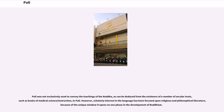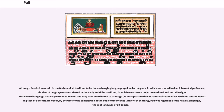Pali was not exclusively used to convey the teachings of the Buddha, as can be deduced from the existence of a number of secular texts, such as books of medical science and instruction, in Pali. However, scholarly interest in the language has been focused upon religious and philosophical literature, because of the unique window it opens on one phase in the development of Buddhism. Although Sanskrit was said in the Brahmanical tradition to be the unchanging language spoken by the gods, in which each word had an inherent significance, this view of language was not shared in the early Buddhist tradition, in which words were only conventional and mutable signs. This view naturally extended to Pali, and may have contributed to its usage in place of Sanskrit.